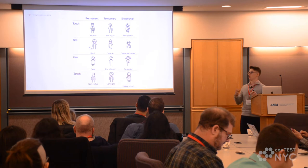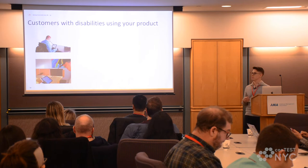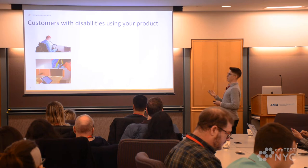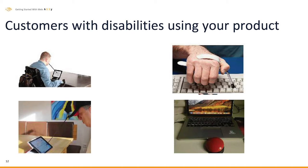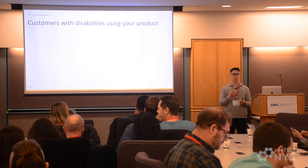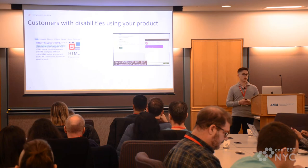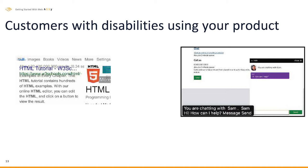Customers with disabilities using your product may be using a mouth wand or head wand if they're unable to use their arms. Also, an assistive switch device allows you to interact with your keyboard if you're unable to use your fingers to press the keys. Customers with poor eyesight need to zoom in, and you need to take into account how your website looks when it's zoomed in at 200%. Customers that are blind will use a screen reader, which is a huge part of web accessibility.